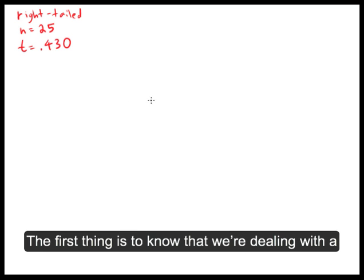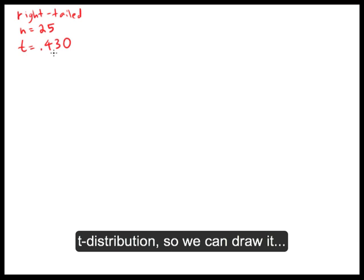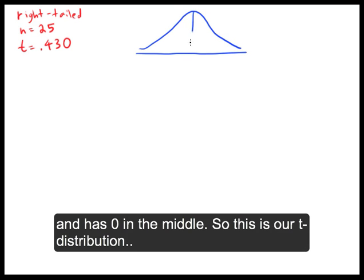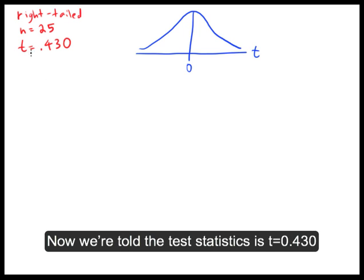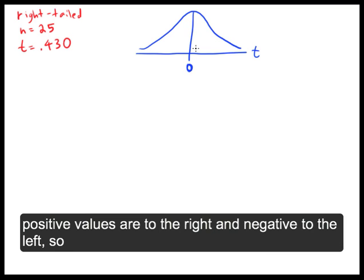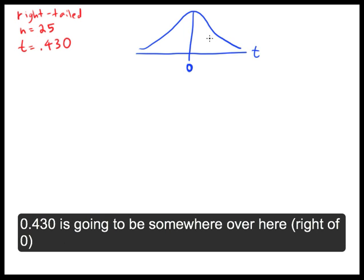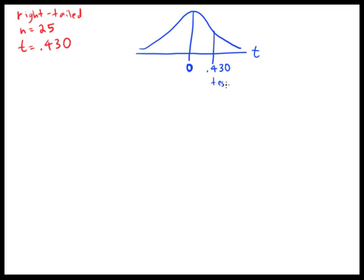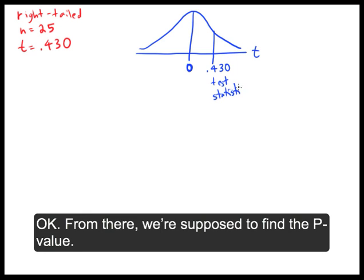Now the first thing is to know that we're dealing with a t-distribution. So you can draw it—it looks a lot like a normal distribution with 0 in the middle. We're told that the test statistic is 0.430. Zero is your middle score, and positive values are to the right and negative to the left. So 0.430 is going to be somewhere over here, and we're going to mark that as our test statistic.